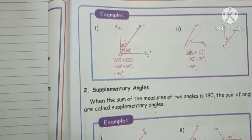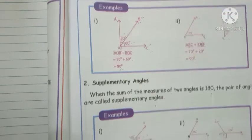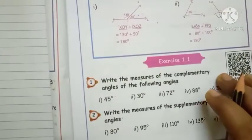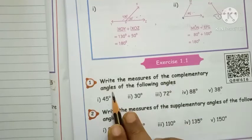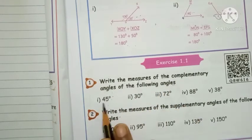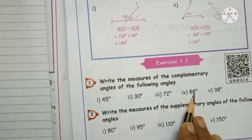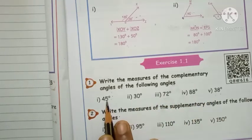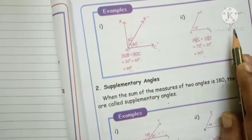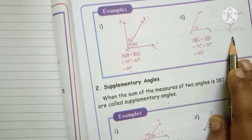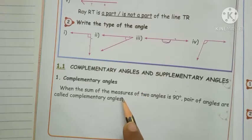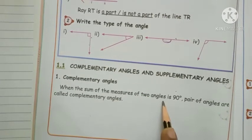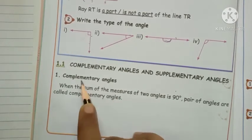Do you understand the concept? Shall I move to Exercise 1.1? Write the measures of the complementary angle of the following angles: 45, 30, 72, 88, 38. Only one angle measurement is given — you must find the other angle. Any two angles added to get ninety are complementary. That is why the sum of the measures of two angles is ninety — called complementary angle.